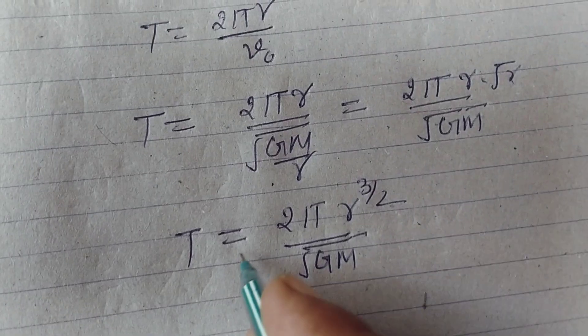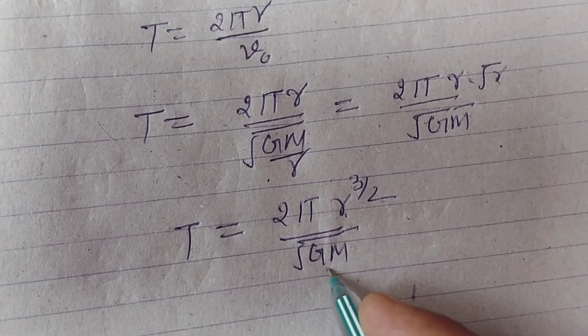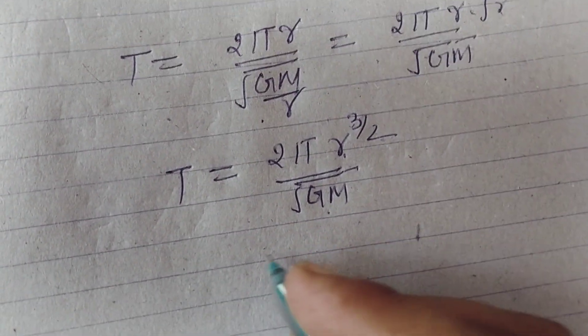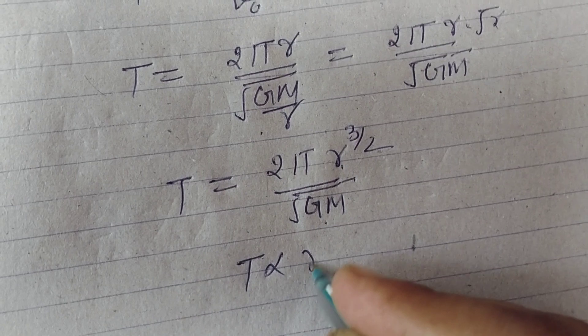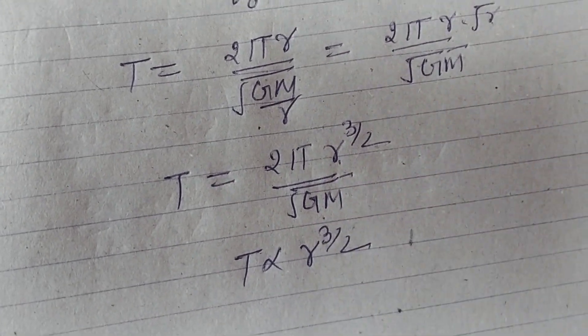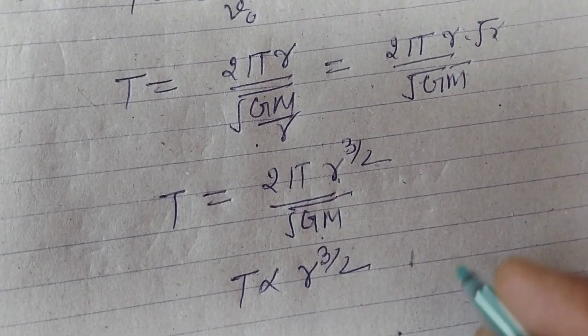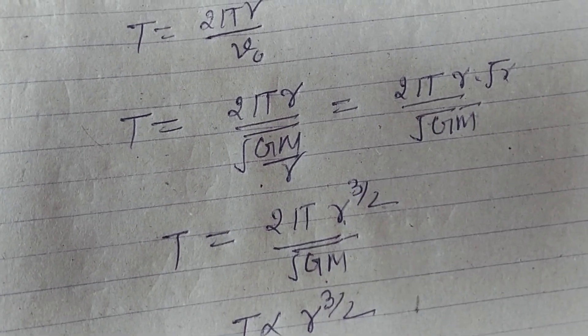Here T depends on r but not on mass of the satellite. So T is directly proportional to r to the power 3/2, but it is independent of mass m.